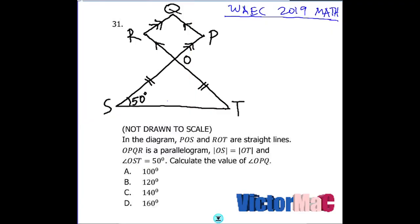Welcome back. This is the 2019 math question. The question states 1 to 40 of the objective. Now the question on geometry. In the diagram, POS and ROT are straight lines. OPQR is a parallelogram. OS and OT are equal, showing that triangle OST is an isosceles triangle.